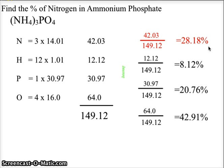12.12 divided by 149 gives 8.12 percent hydrogen. 30.97 divided by 149.12 gives us 20.76, the percent of phosphorus in the molecule, and the percent of oxygen is 64 divided by 149.12, which means we have 42.91 percent oxygen in the molecule.